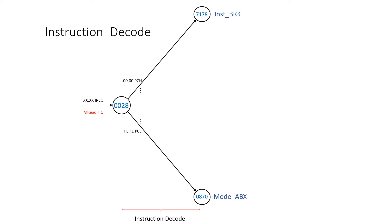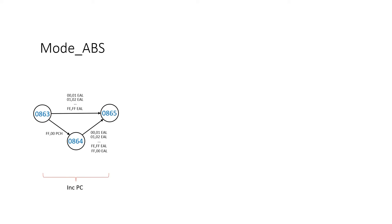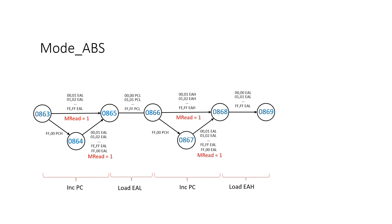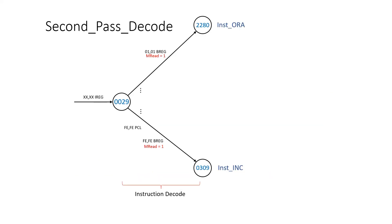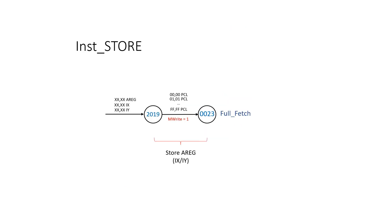As a state machine: the first thing we do is add extra arcs out of state 28. For mode ABS, we increment the program counter, read the value into EAL, increment the program counter, read the value into EAH, and then touch EAL again. We need to touch EAL again because the value in MAR low would have become corrupted by the increment of the PC. Then we call another state machine called second pass decode, which looks a lot like instruction decode — a single rule with a large number of arcs. The arcs for 8D, AD, and CD go directly to the instruction execution machines. Store is straightforward: write the value into main memory and jump to fetch full.